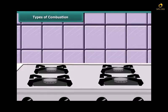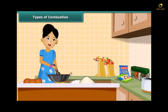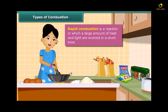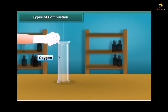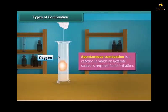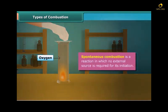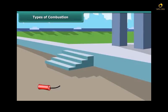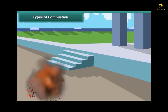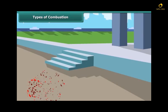Let us now look at types of combustion. LPG burns quickly producing a lot of heat — this type of combustion is called rapid combustion. When white phosphorus is left in the open for some time, it catches fire — this is called spontaneous combustion. Other examples of spontaneous combustion include forest fires and fires in coal mines. The burning of a cracker produces a large amount of heat, light and sound — this type of combustion is called explosion.